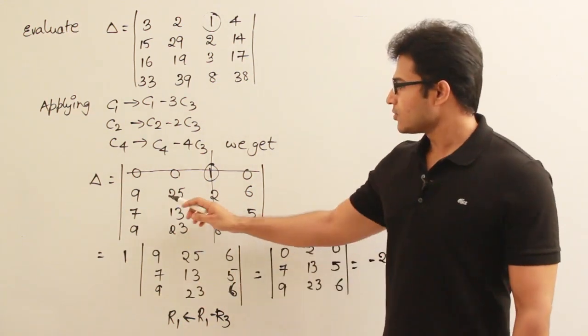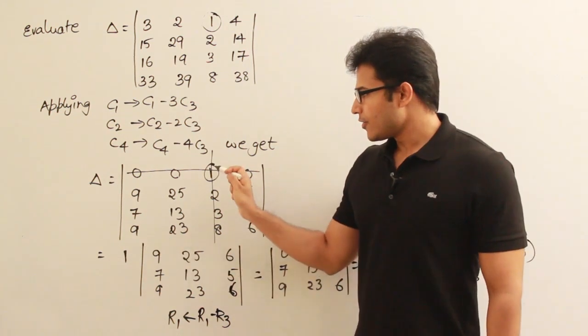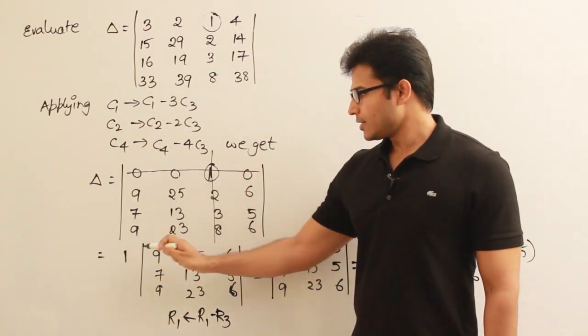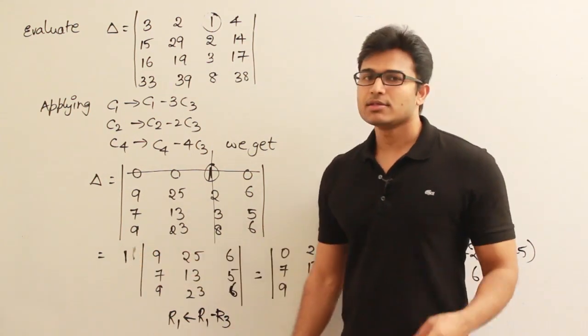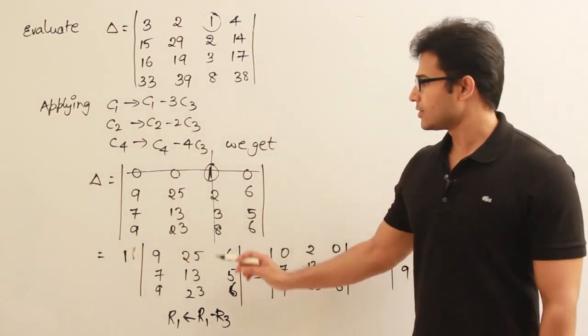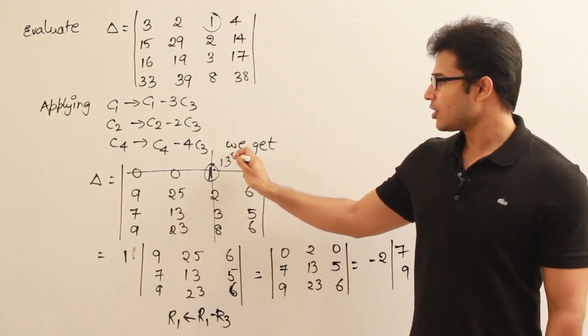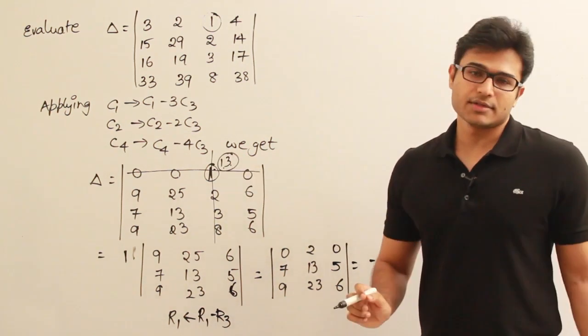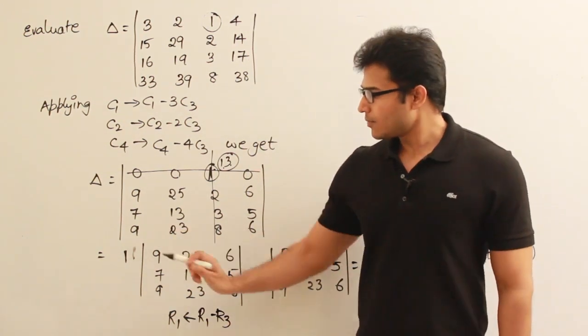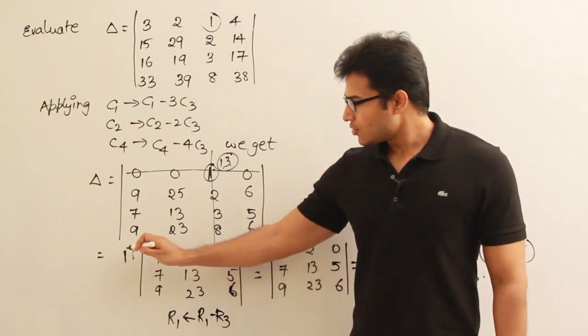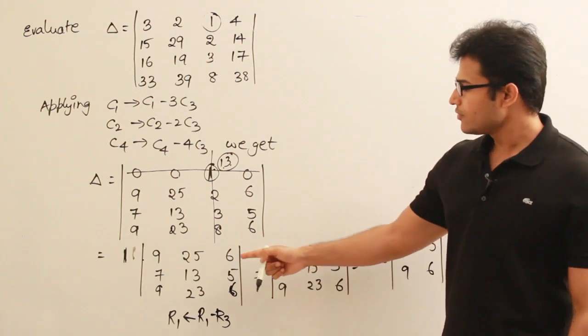The cofactor is nothing but we have to take minus 1 power the sum of the indices. What are the indices here? It is the first row, third column, which means 1 plus 3. 1 plus 3 is 4, minus 1 power 4 is plus, therefore I am not going to put it there. So the element multiplied with its cofactor is this entire thing.